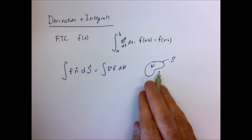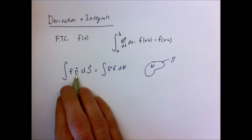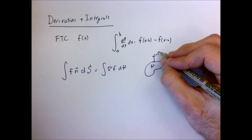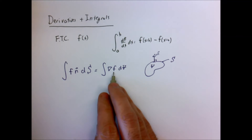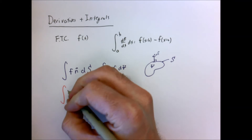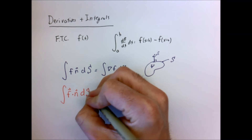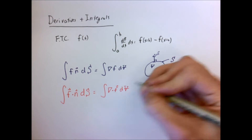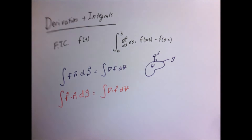We're talking about a surface which bounds a volume V. The first theorem: if I take a scalar function, multiply it by the outward-pointing normal vector, and integrate around the surface, that's equivalent to taking the gradient of that scalar function and integrating over the entire volume. The second theorem: if I have a vector function f, dot it with the normal vector, and integrate over the surface, that equals the divergence of that vector function integrated over the volume. Let's show in a simple example that these are true.